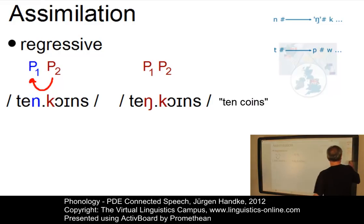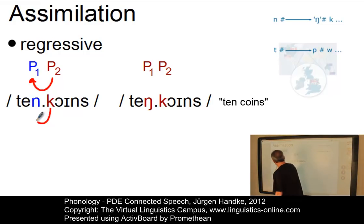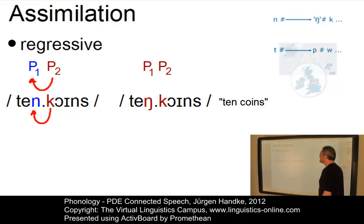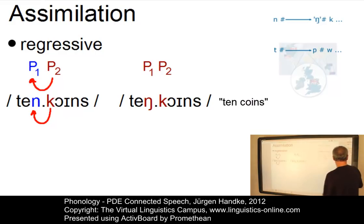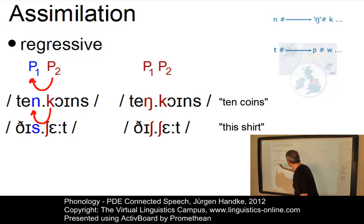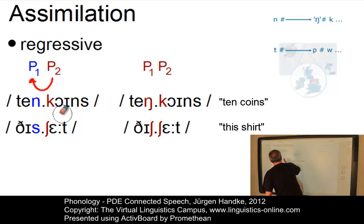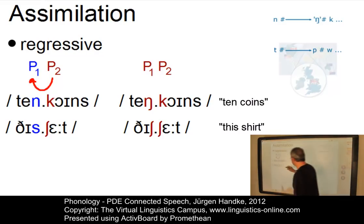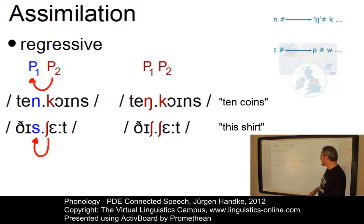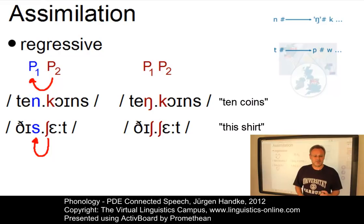'Ten coins' will eventually become 'ten coins' because the velar plosive K influences the alveolar nasal in terms of its place of articulation. So the alveolar nasal becomes a velar nasal. Another example is 'this shirt', where the post-alveolar fricative influences the alveolar fricative. As a result, both obtain the same place of articulation and become post-alveolar. The result would be 'this shirt'.